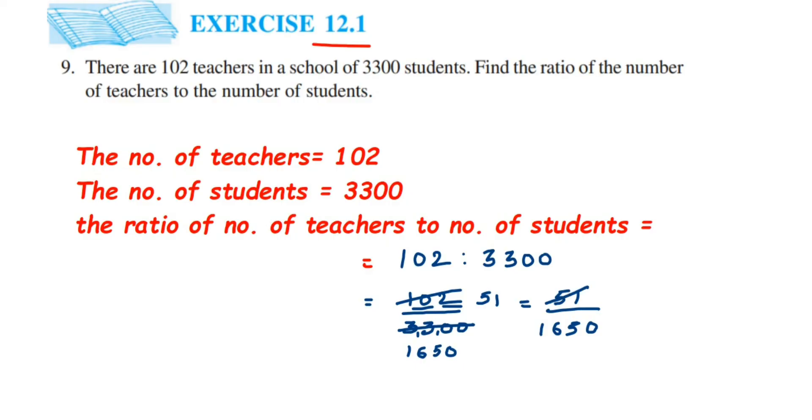So 3 times 1 is 3. We have 5, right? So 5 doesn't go. So 3 times 1 is 3. So if you subtract 5 minus 3, the remainder is 2. So that makes a number 21. Then 3 times 7 is 21.